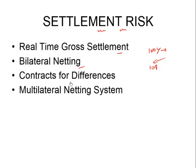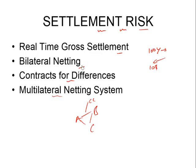Similar is the concept of contracts for differences. In multilateral netting systems, if A, B, C have different obligations to each other, a central counterparty will calculate the net obligation of each to the other and decide the payments. These are all methods of reducing settlement risk, and we'll study netting and these concepts in more detail in coming sessions.